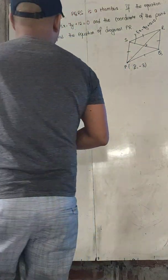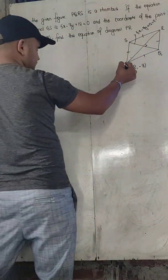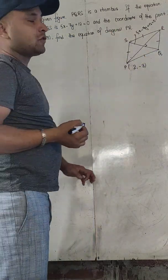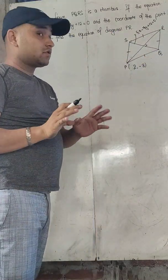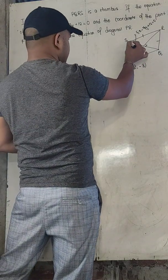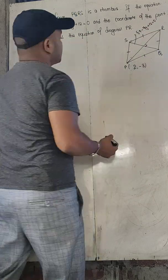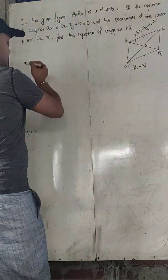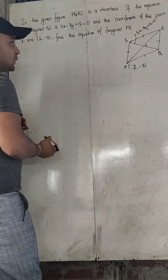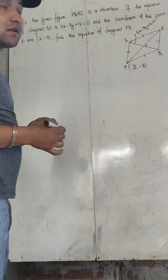In the given figure, PQRS is a rhombus. Rhombus means all sides are equal but diagonals are not equal. The equation of diagonal QS is given as 5X minus 7Y plus 12 equals to 0, and the coordinate of the point on diagonal PR is (2, minus 3). You have to find the equation of the other diagonal PR.